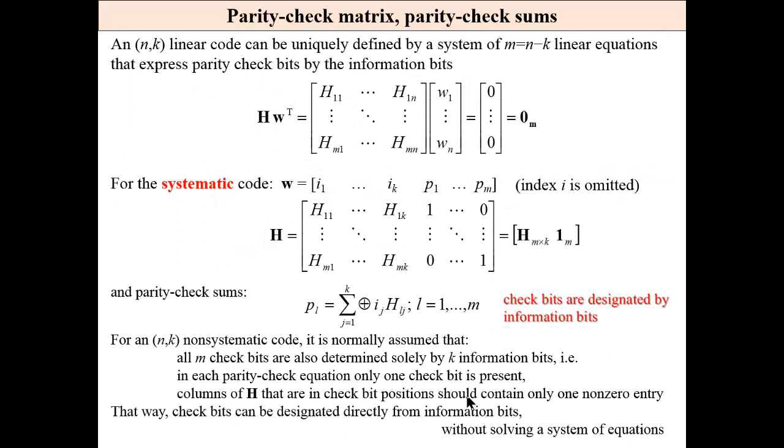For systematic code, at the left side of the codeword we have information word. We have information word and parity check bits are at the right. Then it is easy to say that P1 is designated by these bits. Pm is designated by these bits.